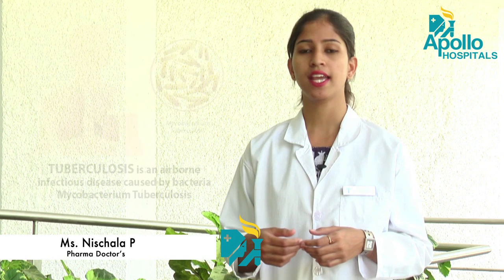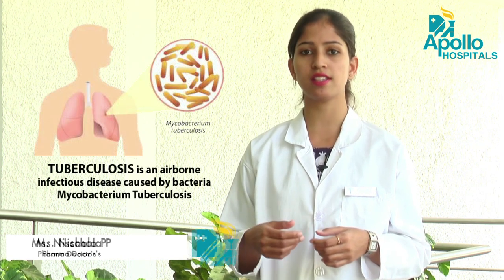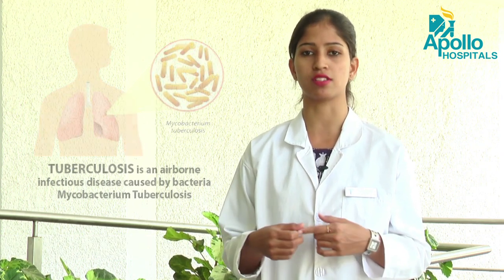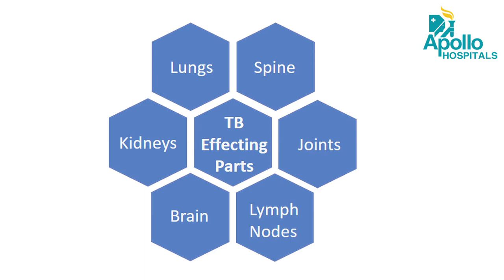TB exists everywhere and can affect anybody. It is an infectious airborne disease caused by Mycobacterium tuberculosis. Most often it affects the lungs, but it can also affect the spine, joints, lymph nodes, and brain.